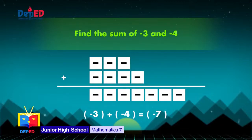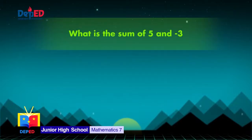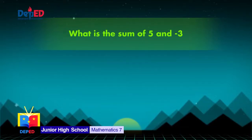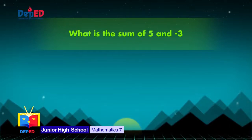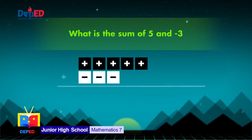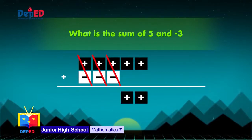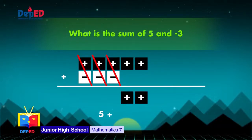Now try this: get the sum of 5 and negative 3. We can represent 5 using 5 positive tiles and negative 3 using 3 negative tiles. Since the first 5 tiles are positive and the next 3 tiles are negative, the 3 positive tiles and 3 negative tiles will cancel out each other. There will be 2 remaining positive tiles. Therefore, 5 plus negative 3 is equal to 2.